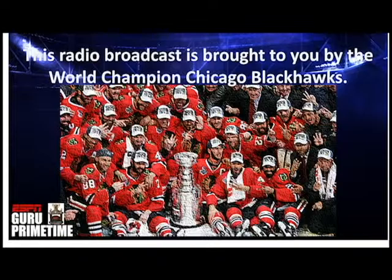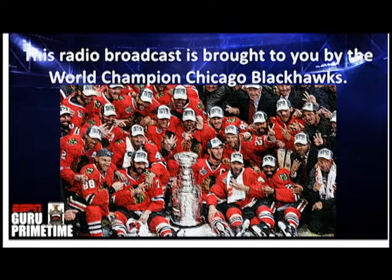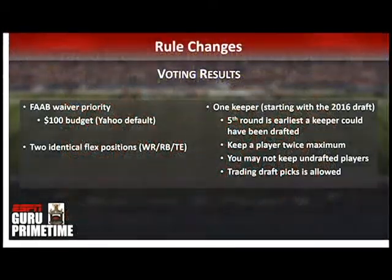The voting results for the potential rule changes are in. As far as what changes are here, the FAAB waivers is indeed in — free agent acquisition budget — and the $100 Yahoo default budget was what won out in the voting. So that will be the budget: $100 fake dollars for the FAAB.